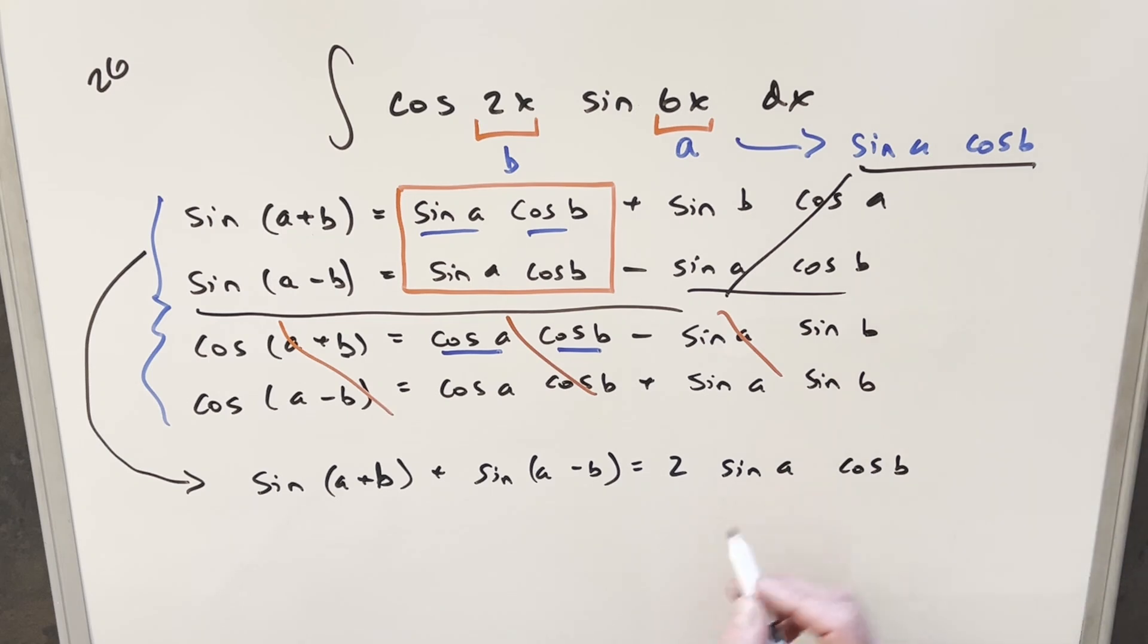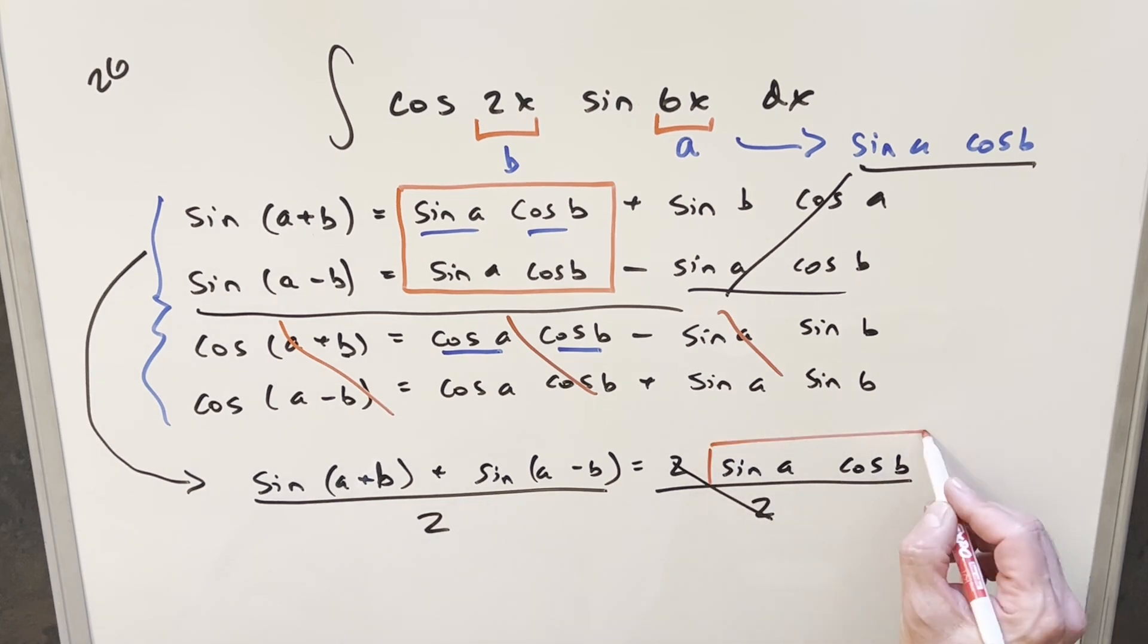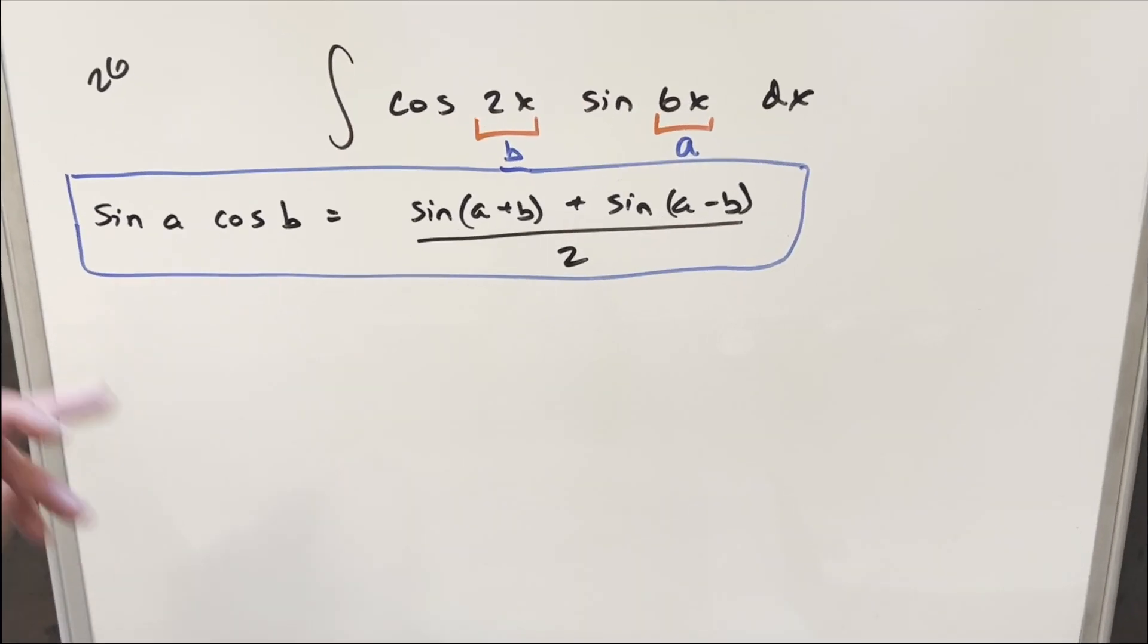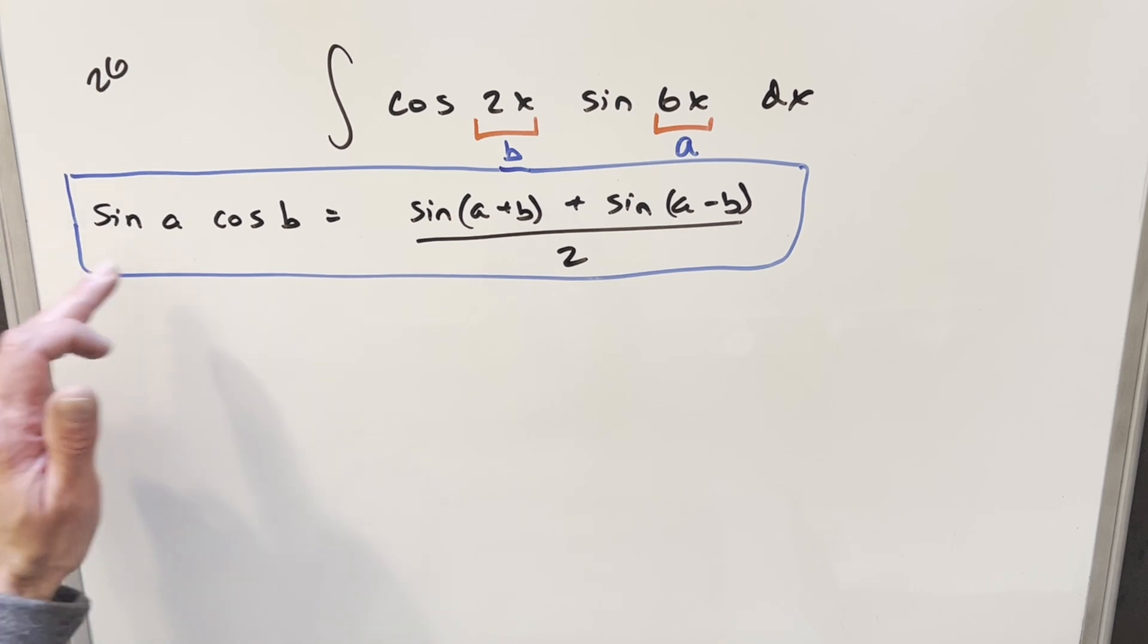But we want to get a value for sine a cos b. So all I need to do is if I just divide by two here, that's going to cancel. And I'll divide by two on the other side. And so for sine a cos b, this is going to give us our value right here.